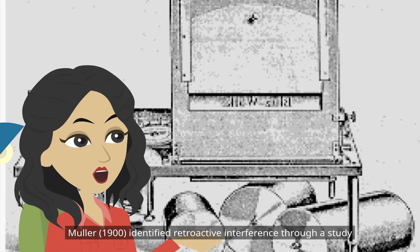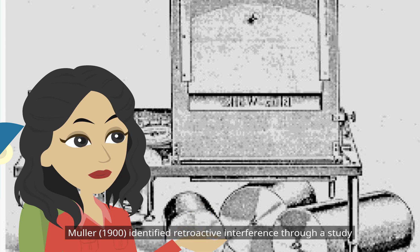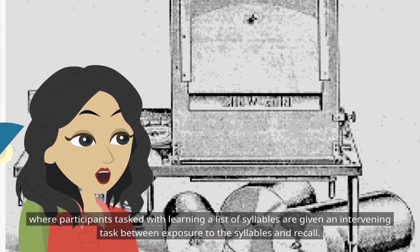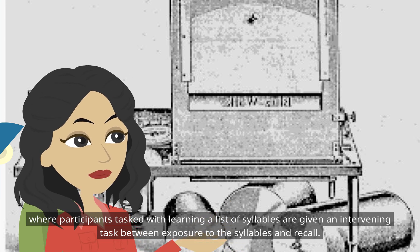Muller, 1900, identified retroactive interference through a study where participants tasked with learning a list of syllables were given an intervening task between exposure to the syllables and recall.